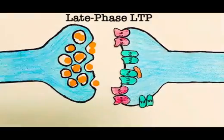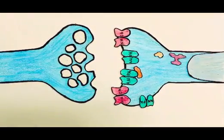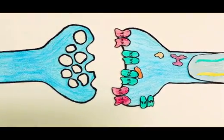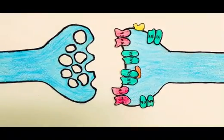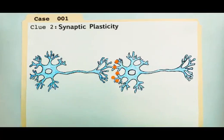With even more practice, late phase LTP occurs, where enzymes order the creation of new proteins and receptors through protein synthesis. Thus, the communication between neurons is more effective and is strengthened by practice.